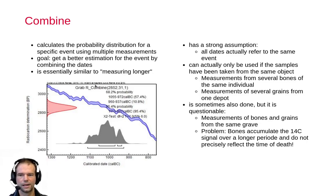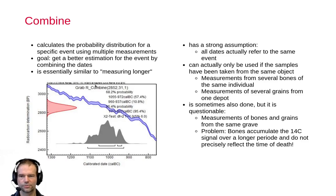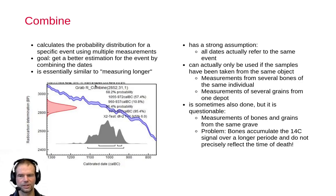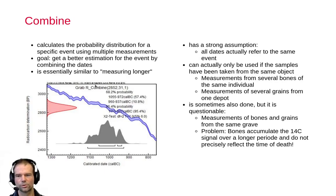Combine is a very simple function used to calculate the probability distribution for a specific event using multiple measurements of the same event. The goal is to get a better estimation of the event by combining these dates, and it is essentially the same as if you would measure an individual sample longer — taking multiple measurements and making a mean of them, which reduces the standard deviation.